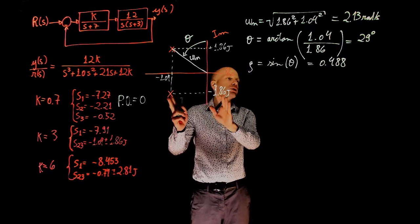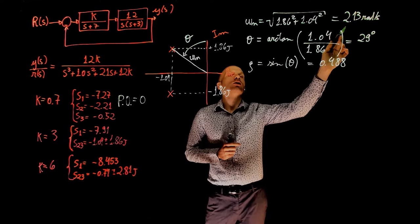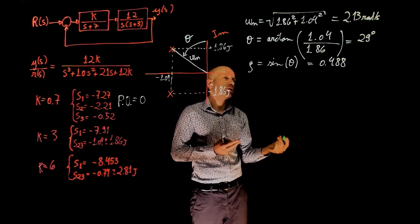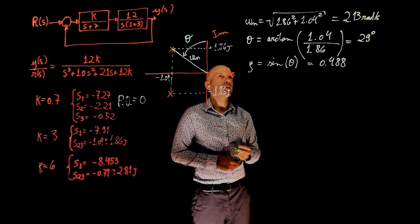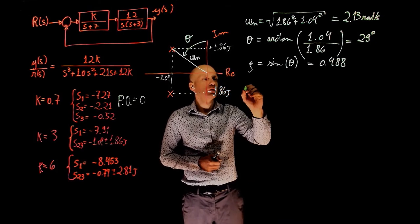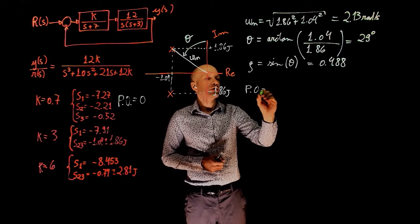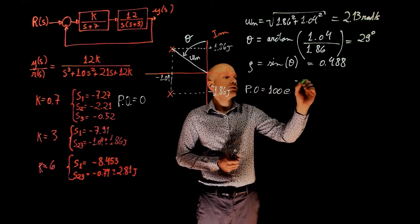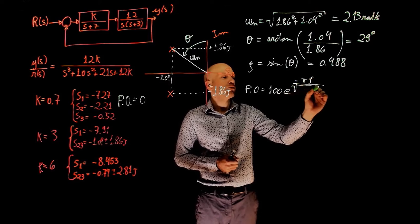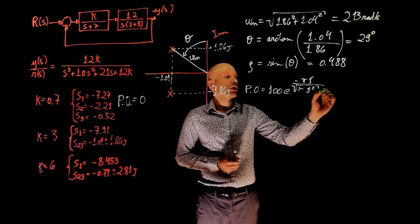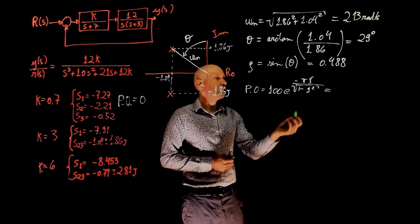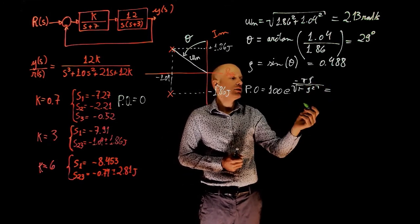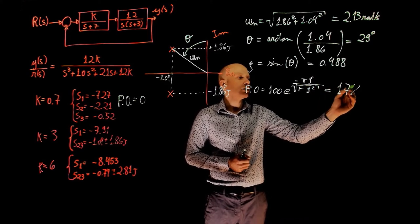Now, from this simple trigonometric relation, we found ωn and we found the damping ratio. We can now calculate the percent overshoot and we can also calculate the settling time. Let's start with the percent overshoot. The percent overshoot is simply 100 times the exponential of negative π times ζ divided by square root of 1 minus ζ squared. This is a simple function. We have ζ 0.488. So, this gives a percent overshoot of 17%.